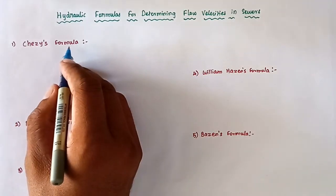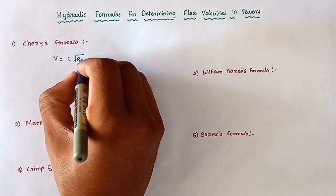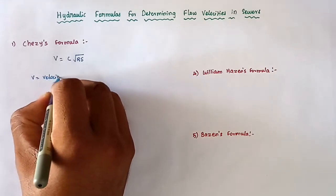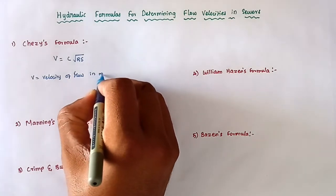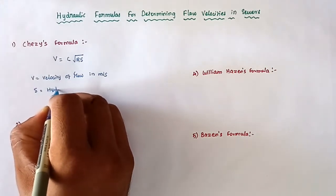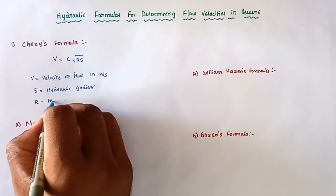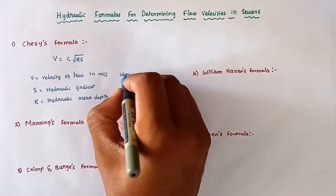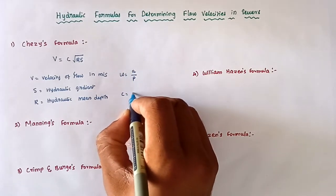The first formula is Chezy's formula. The formula is V = C × √(R × S). Here V is the velocity of flow in meters per second, S is the hydraulic gradient, R is the hydraulic mean depth — where R equals area divided by wetted perimeter — and C is Chezy's constant.